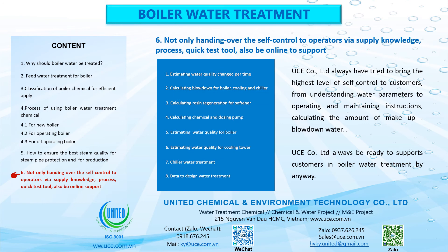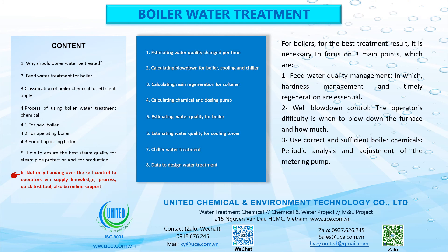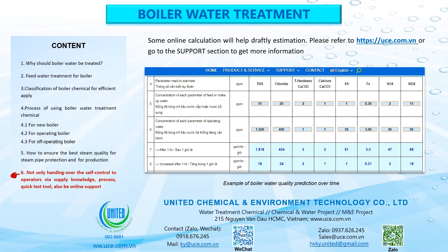6. UCE Co. Limited always strives to bring the highest level of self-control to customers — not only handing over self-control to operators via knowledge, process, and quick test tools, but also being online to provide support — from understanding water parameters to operating and maintaining instructions, calculating the amount of makeup water and blowdown. For the best boiler treatment result, it is necessary to focus on three main points: 1. Feed water quality management, in which hardness management and timely regeneration are essential. 2. Well blowdown control — the operator's difficulty is knowing when and how much to blowdown. 3. Use correct and sufficient boiler chemicals, with periodic analysis and adjustment of the metering pump. Some online calculation tools will help with rough estimation. Please refer to https://uce.com.vn or go to the support section to get more information.